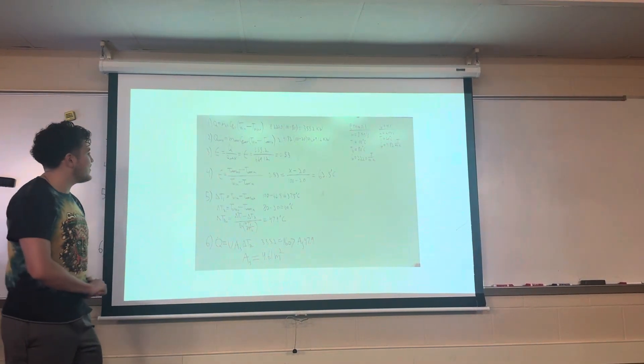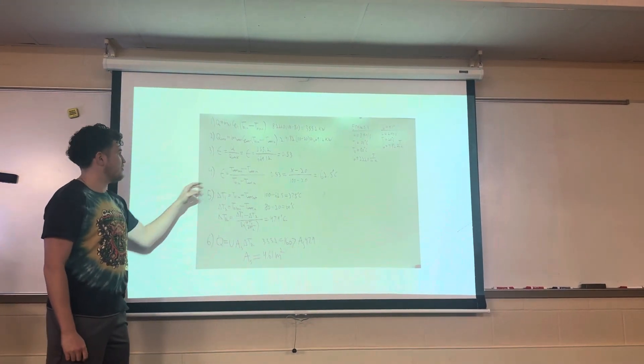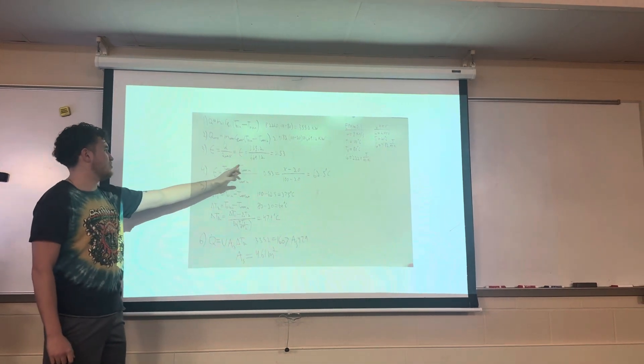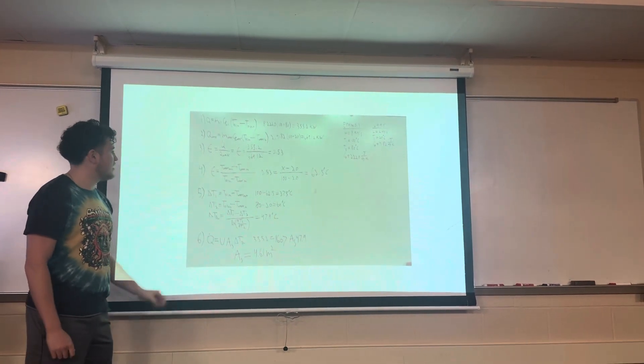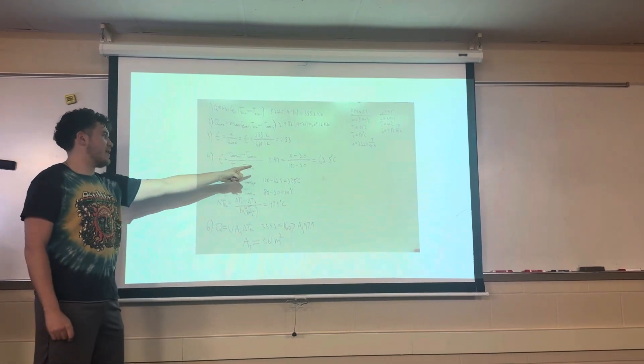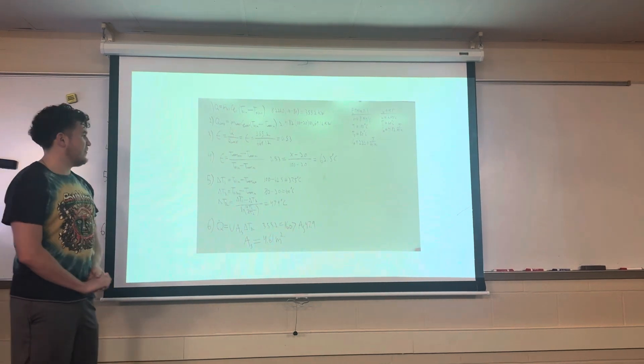Next we solve for the outlet temperature of the water. We use this equation: the effectiveness is equal to water out minus water in, over oil in minus water in. We end up with 62.5 degrees Celsius for that outlet temperature for the water.